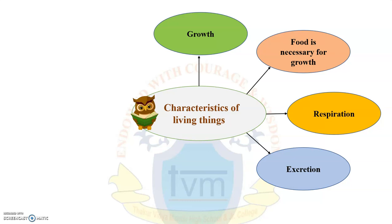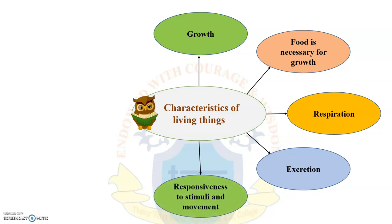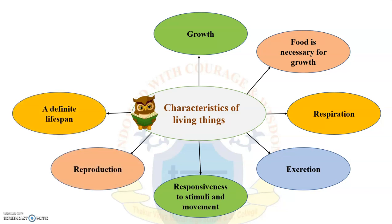In the previous session, we covered the four characteristics of living things: growth, food is necessary for growth, respiration, and excretion. Today we are going to cover the following characteristics: responsiveness to stimuli and movement, reproduction, a definite life span, and a cellular structure.